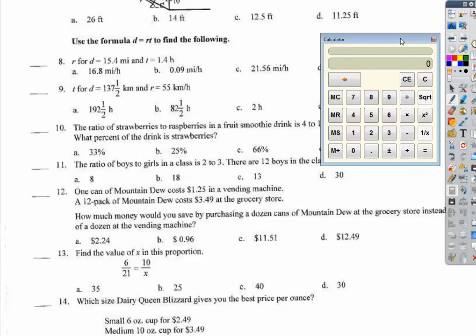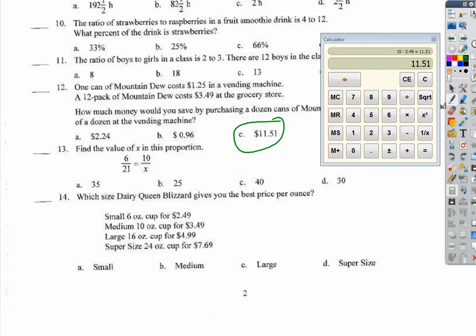A can of Mountain Dew. This stuff is nasty. It costs $1.25 in a vending machine. But a 12 pack costs $3.49 at the grocery store. How much money would you save by purchasing the Mountain Dew at the grocery store instead of the vending machine? We need to figure out the cost of one can, or how much it will cost to get 12 cans from the vending machine. So, 1.25 times 12. So, that's $15. Subtract out the $3.49, because that's what you'd pay anyways at the grocery store, and you get $11.51. I don't think I'm ever using a vending machine again. It's a rip off.